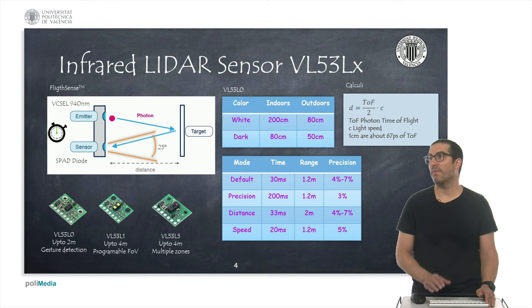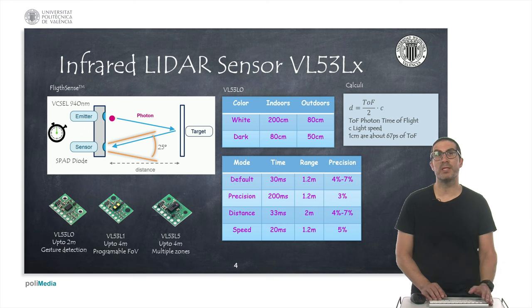If it's the case of the VL53L0 version, but other models can detect up to 4 meters. And also it's worth mentioning that the color affects the sensor ability to detect, particularly with dark colors offering a worse characteristic because they absorb more light, and it also affects whether you use these sensors indoors or outdoors because sunlight also affects the ability of these sensors.